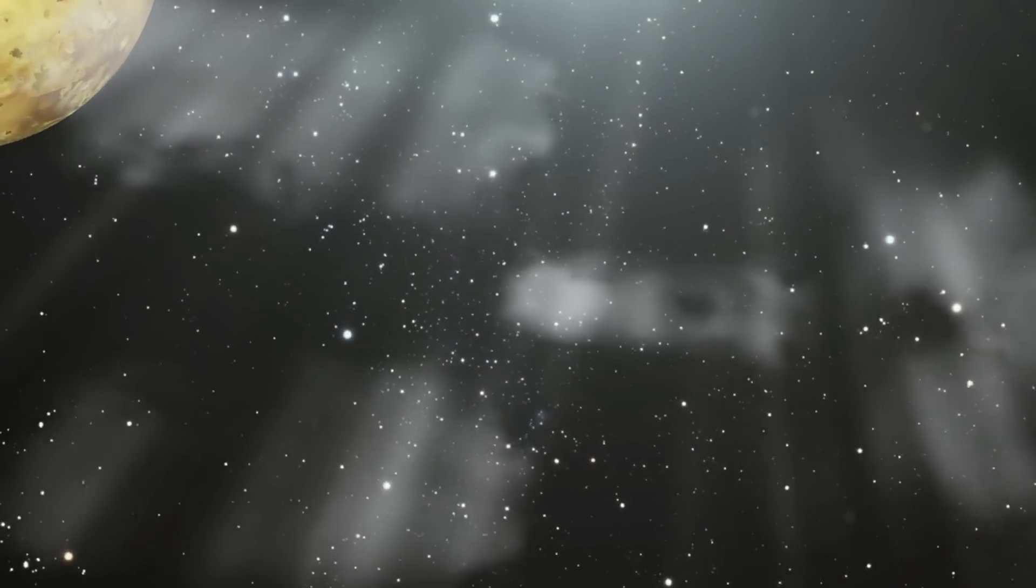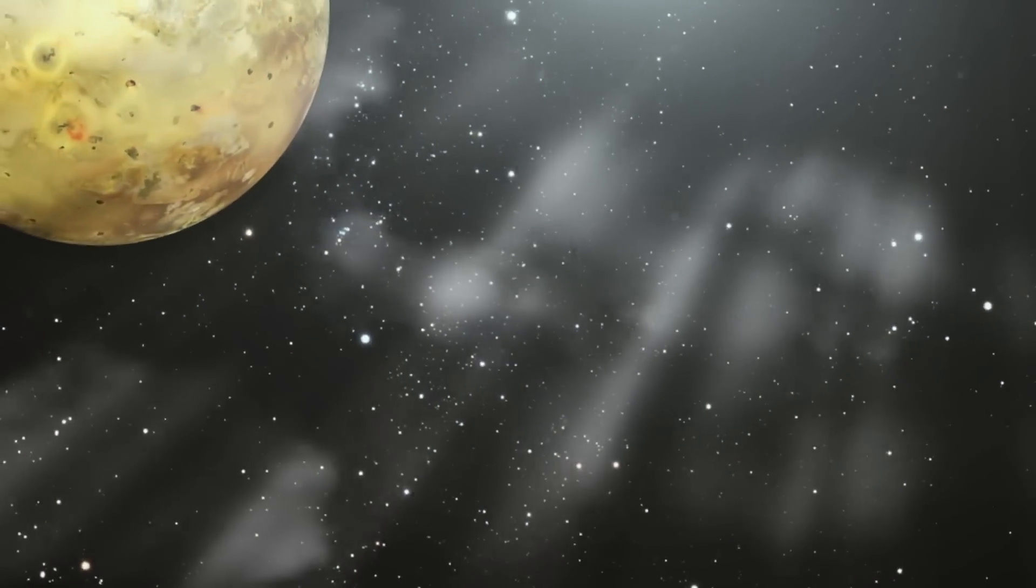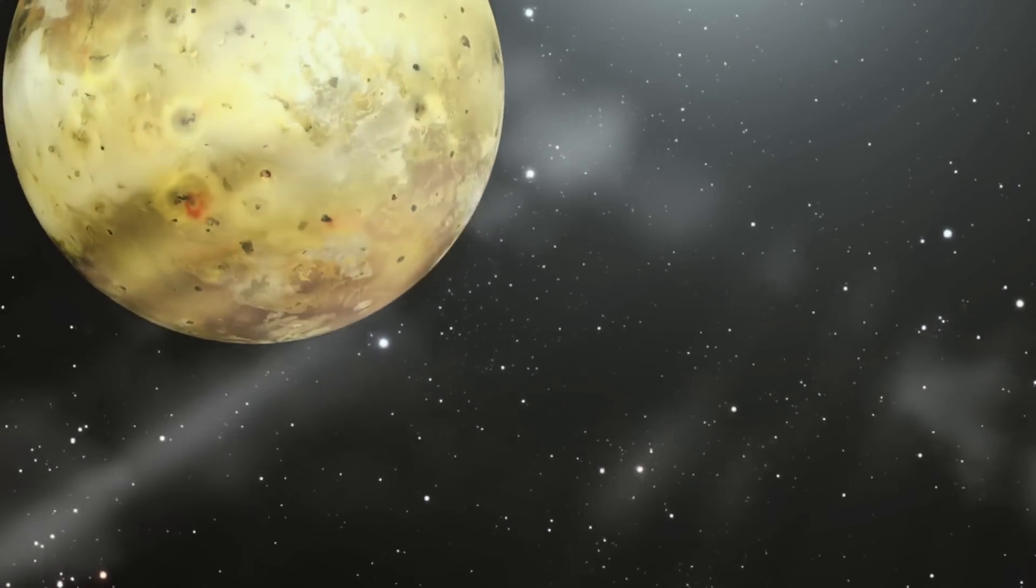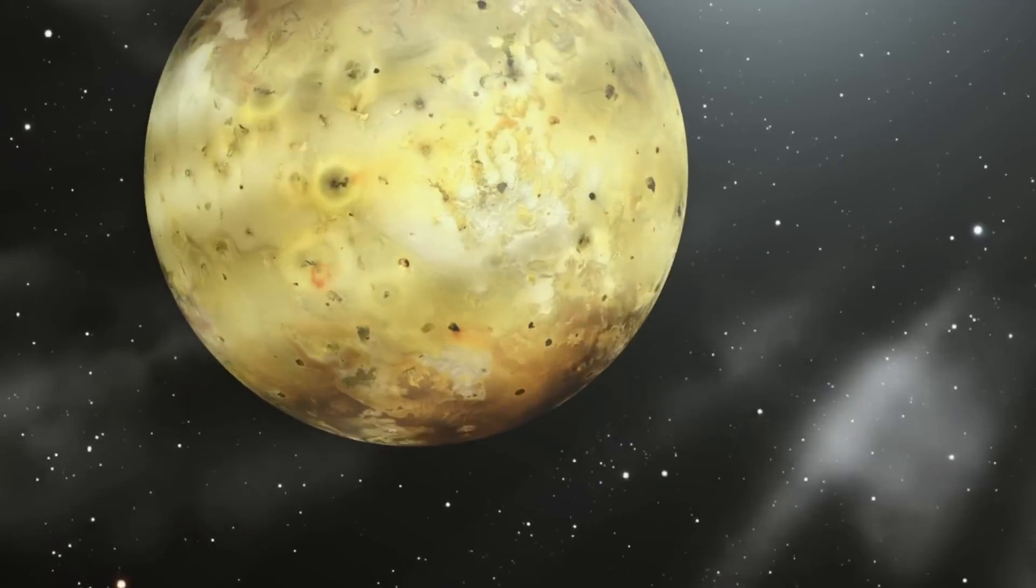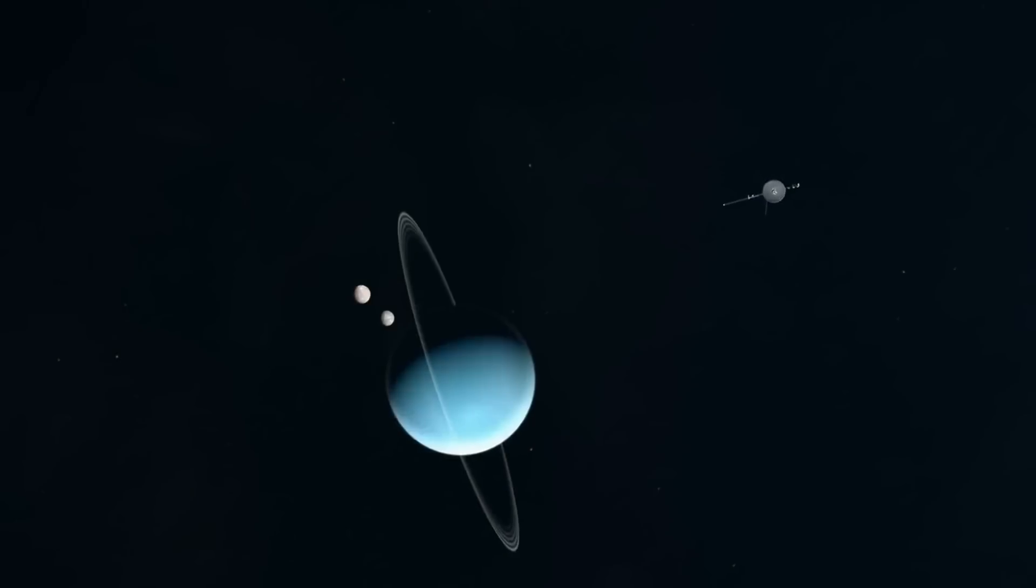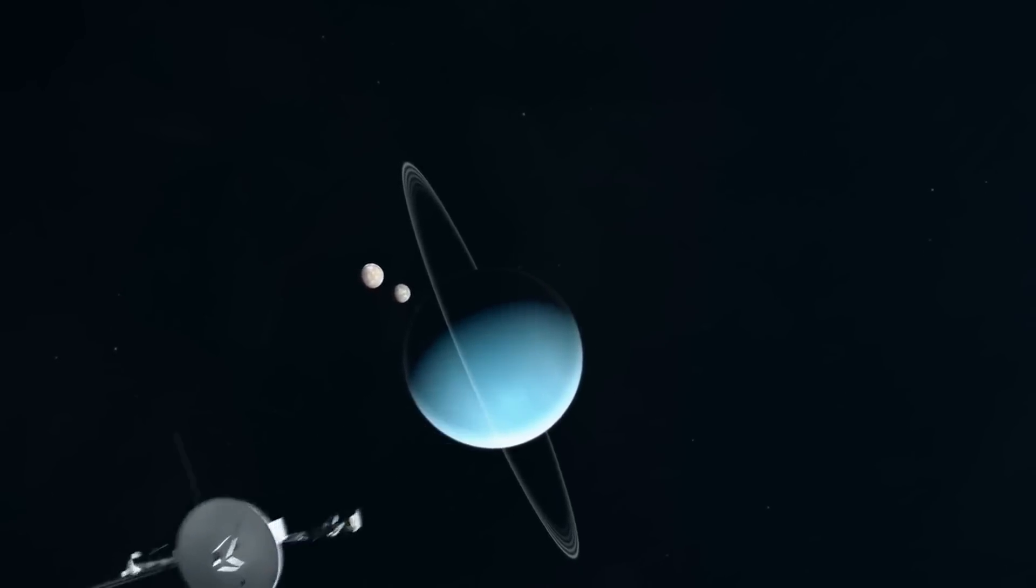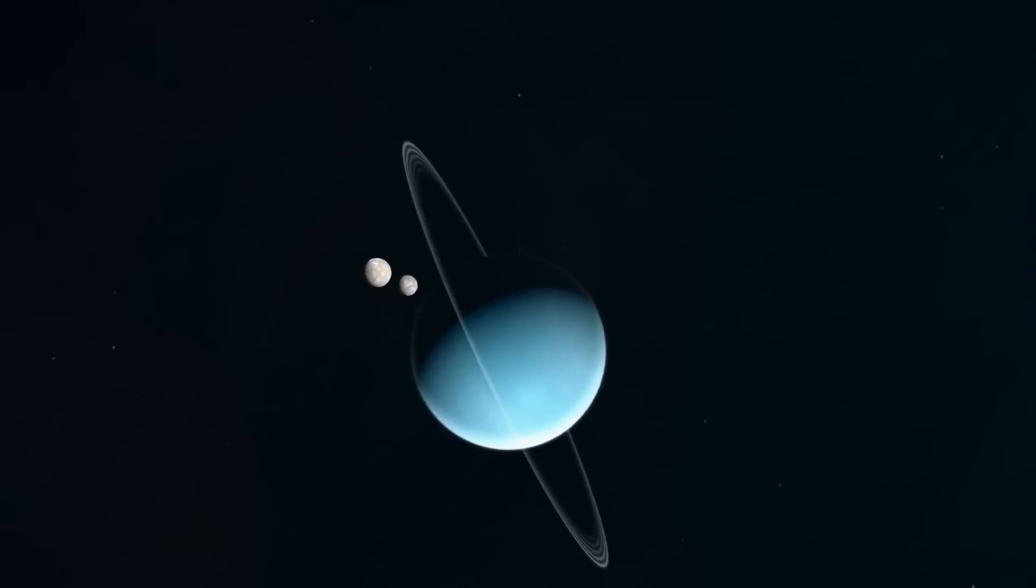More surprising were the discoveries made about Jupiter's moons, particularly Io, which was found to be the most volcanically active body in the solar system. These findings challenged pre-existing notions about the nature of moons, previously thought to be inert and lifeless, similar to Earth's own moon.